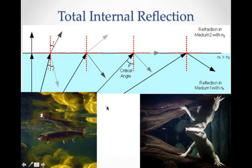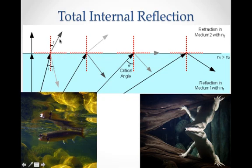Total internal reflection is a phenomenon that happens when you're going from a medium where the wave travels more slowly to a medium where the wave travels faster. When that happens, if you recall from refraction, the wave comes out and refracts and bends away from the normal. And so when the angle of incidence gets greater, this refracted angle gets even greater and bends away from the normal even more.